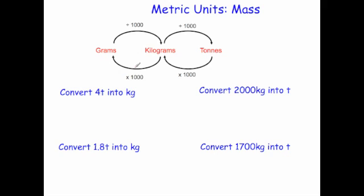Now we're going to include some tons. Convert 4 tons into kilograms. To go from tons to kilograms, you times by a thousand. So we do 4 times 1,000, which is equal to 4,000 kilograms.